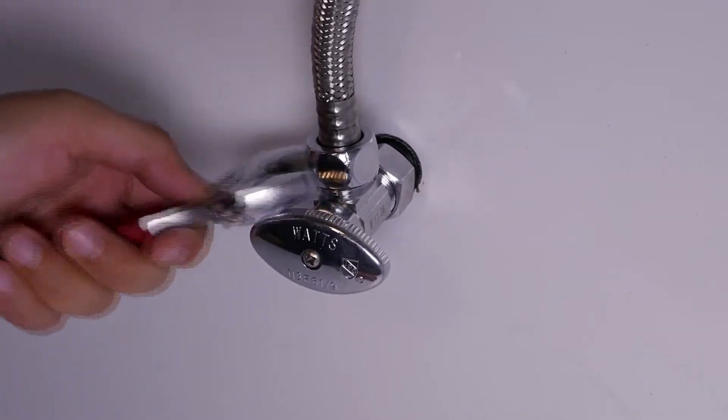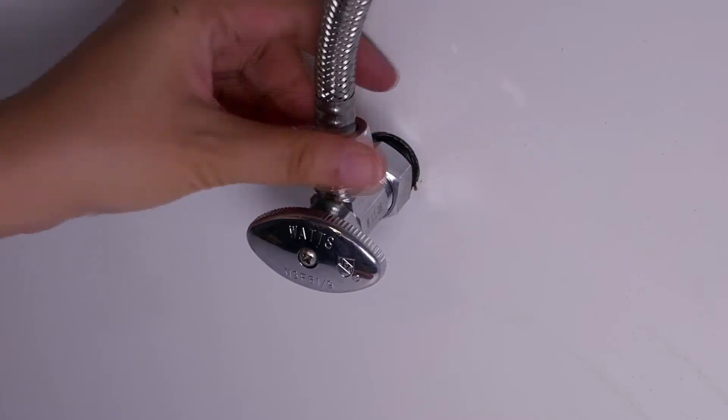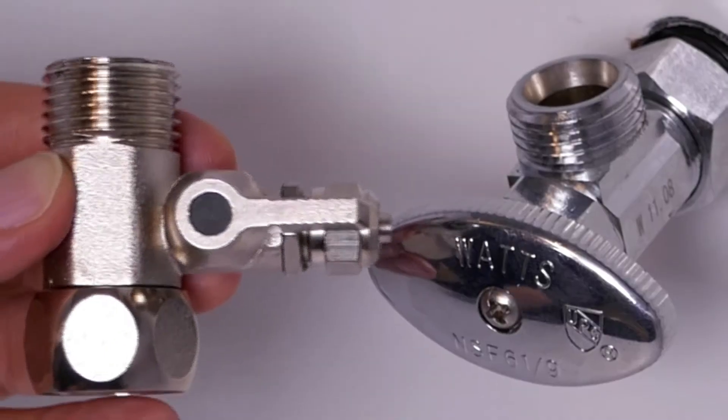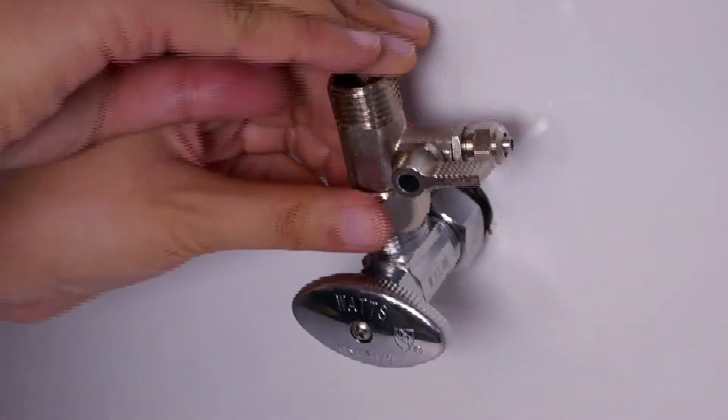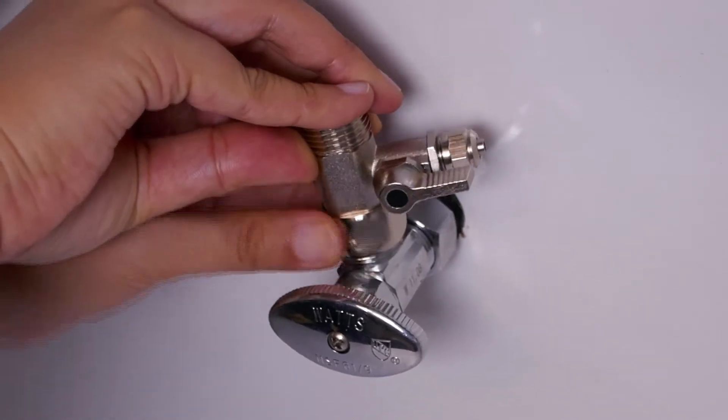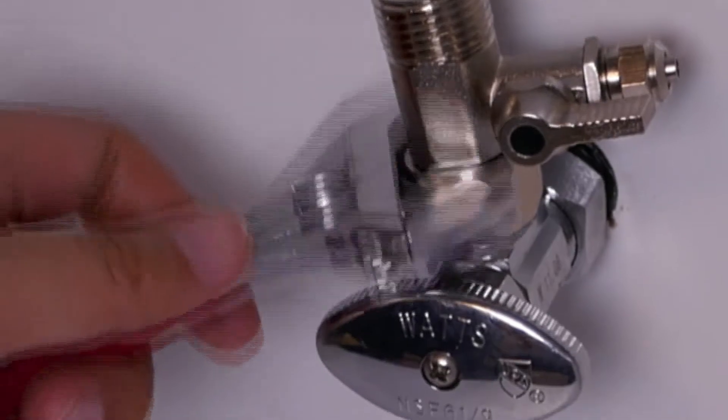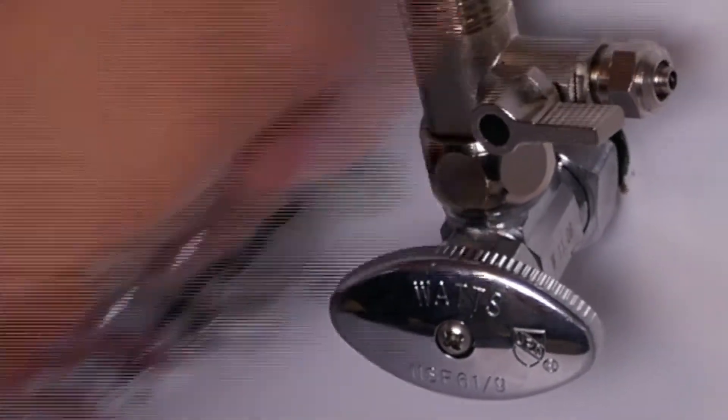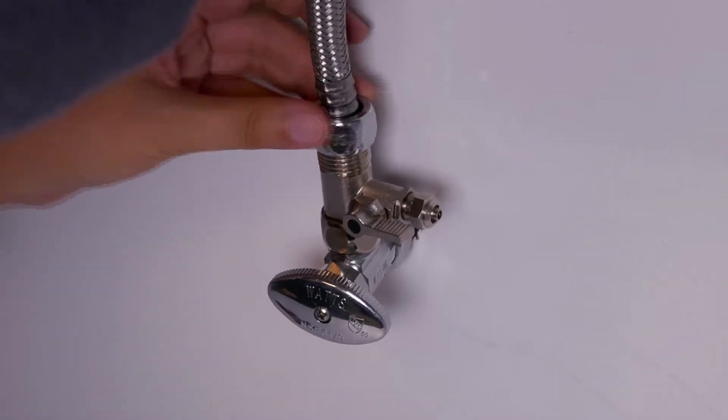Disconnect the hose connected directly to the cold water valve using a wrench. Connect the adapter directly to the water valve. Please make sure the black rubber o-ring is inside of the adapter. Reconnect the hose that was connected to the cold water valve.